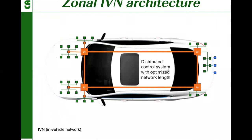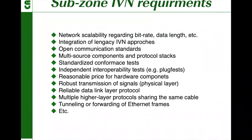For this zone-oriented architecture, we need more bandwidth to transmit all relevant data. The zone network must provide scalability regarding bitrate and data lengths, integration of latency in in-vehicle approaches, and open communication standards. As it seems, CAN-XL could be a good concept for this new architecture.